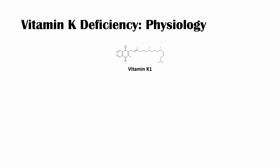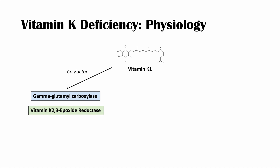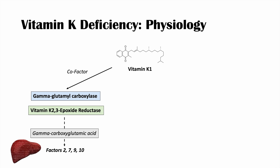So why do we need vitamin K? Vitamin K acts as a cofactor for enzymes like gamma-glutamyl carboxylase and vitamin K 2,3-epoxide reductase. These enzymes add a gamma-carboxyl glutamic acid to coagulation factors 2, 7, 9, and 10 in the liver. Adding gamma-carboxyl glutamic acid to these factors allows them to bind to platelets better.